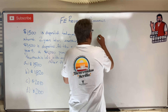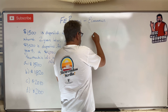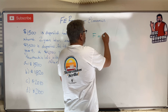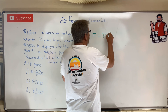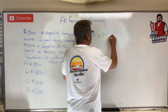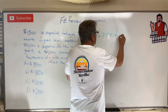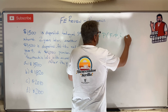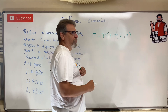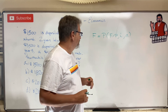So the future value is equal to that present value times F given P, comma I, comma N. That's the factor I want to use for all three of these things.